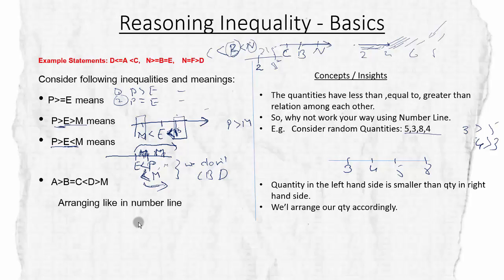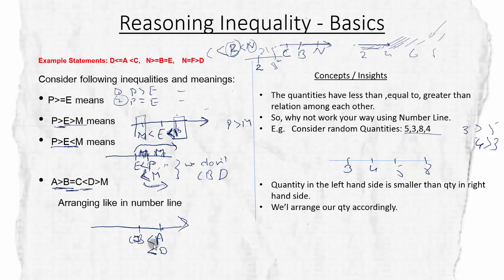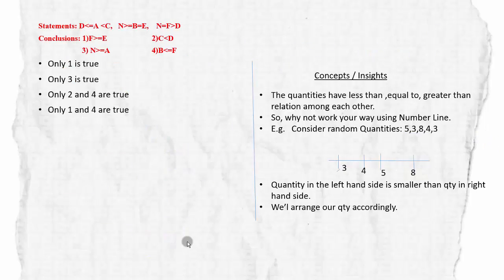Let's try an example. We have quantities A, B, C, D, M with given relations. The greater quantity goes towards the right. Starting: A is greater than B, so A is to the right of B. B equals C, so C is at the same position as B. D is greater than C, so D is to the right of C (and B). B is greater than M, so M is to the left of B. Therefore D is also greater than M.